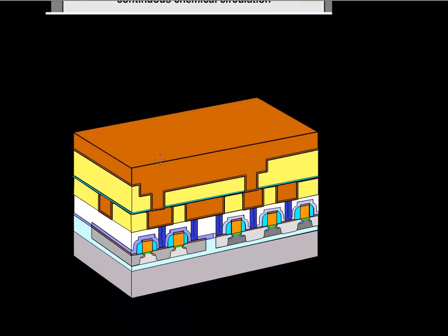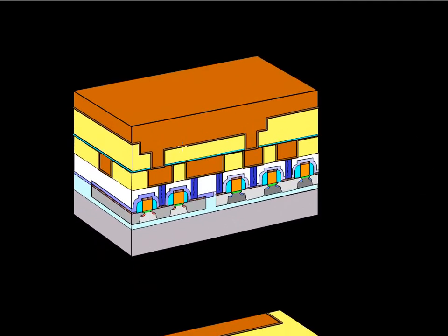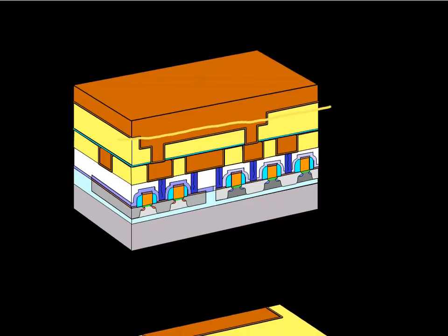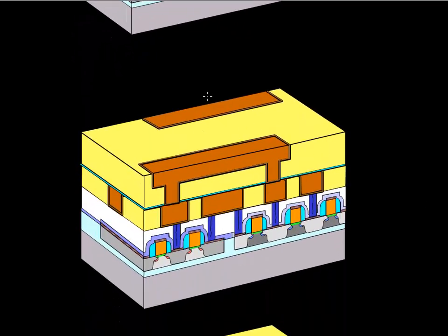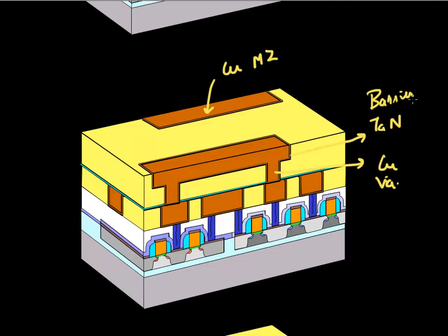And what you get essentially is this conformal deposition of copper. So you get copper deposited into your film. And then the next thing you do is you polish this off until you reach your, until you see your oxide layer again. So you polish this off. And now what you're left with the copper metal lines, and also this copper vias. And you also have this barrier on the side which prevents the copper from diffusing into this oxide.